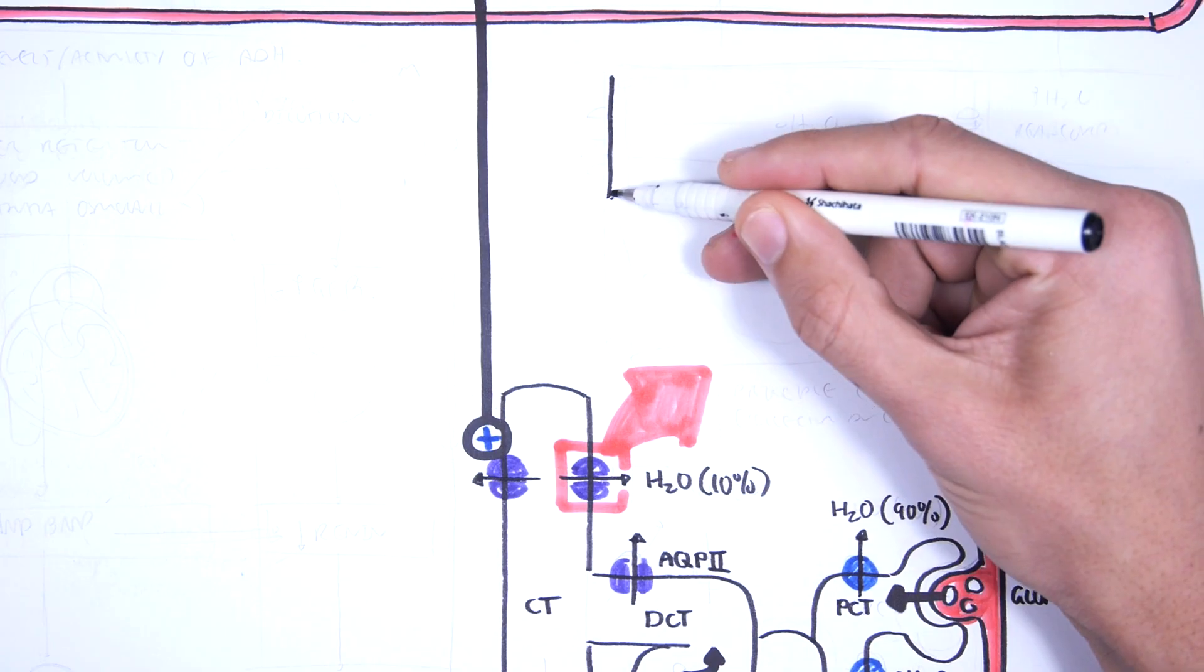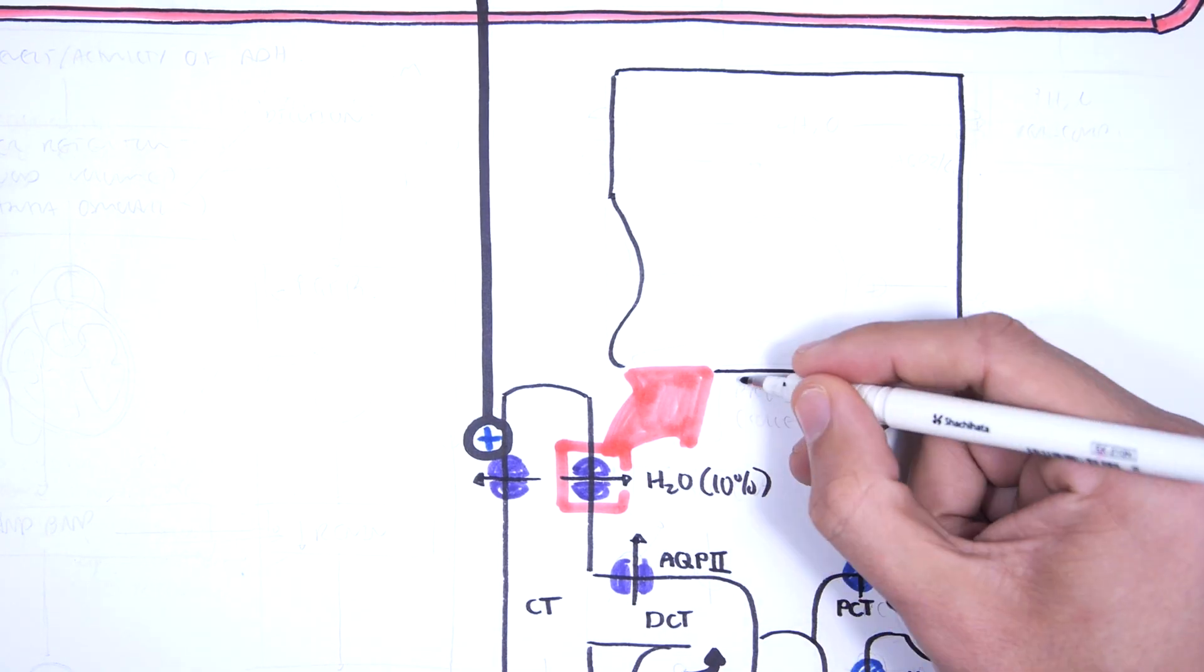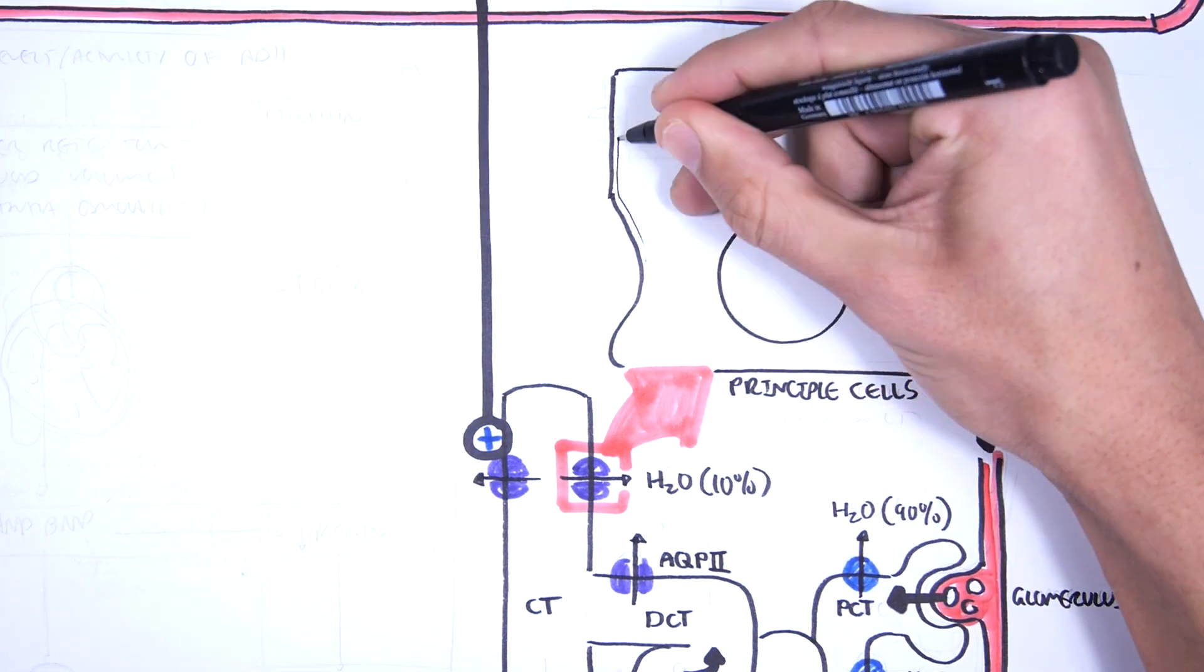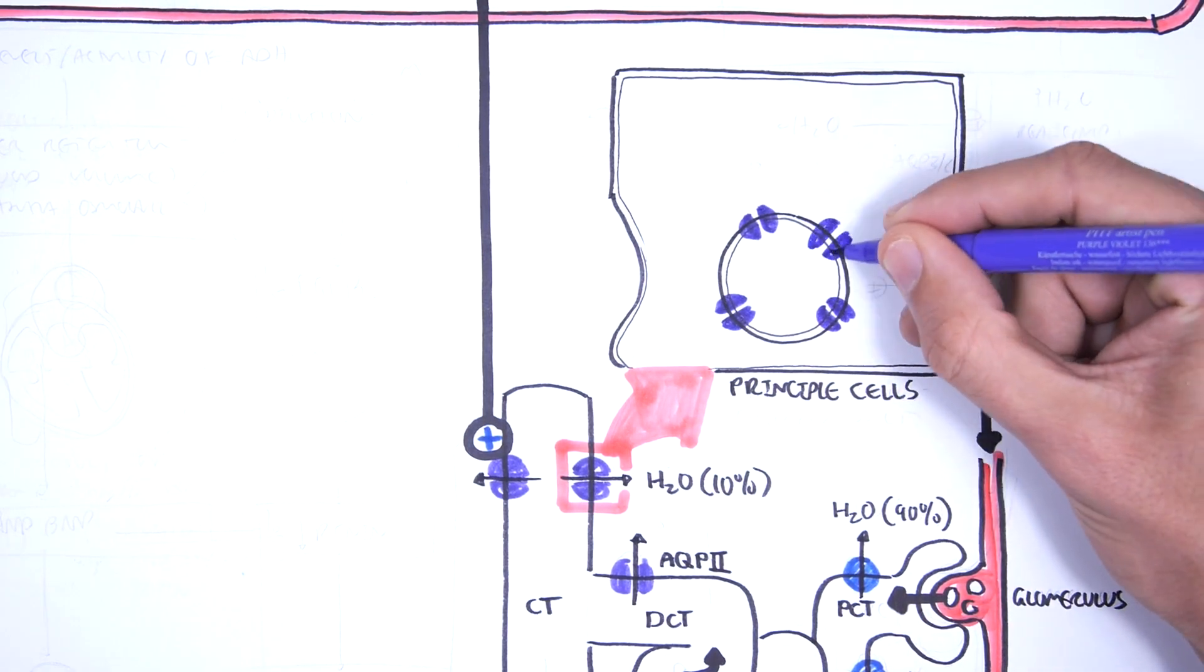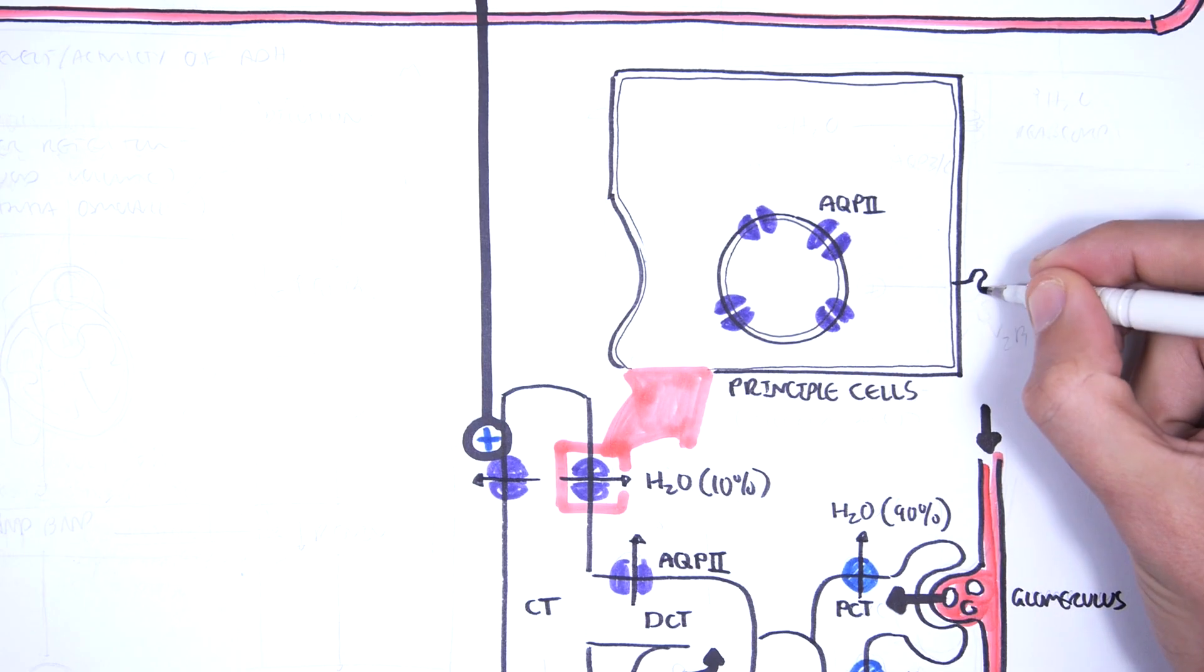There are cells which line the collecting ducts called principal cells. Principal cells have all these aquaporin type 2 channels in this endosome, the cytosome, ready to be expressed by the cell membrane.